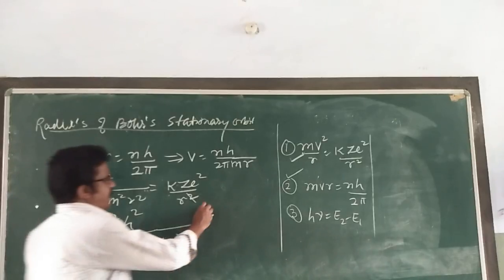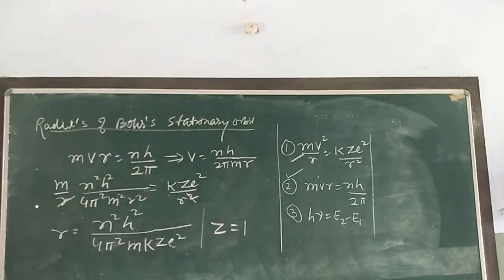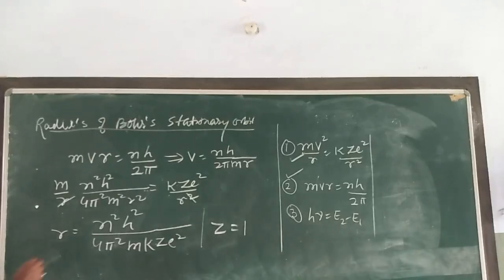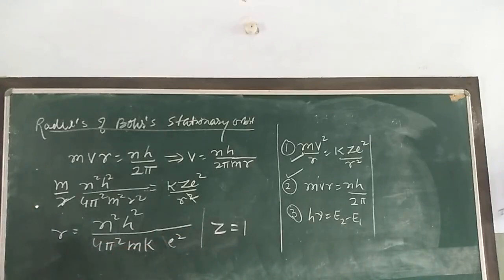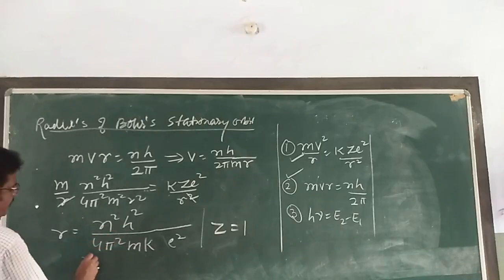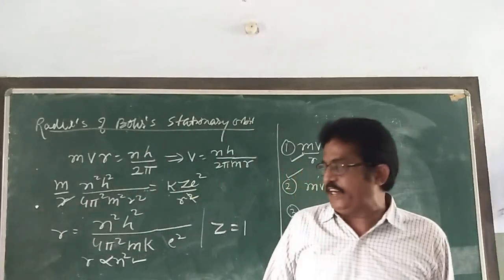For the hydrogen atom, we write z = 1. This is the value of the radii. So r = n²h²/(4π²mke²). This shows that r is proportional to n².